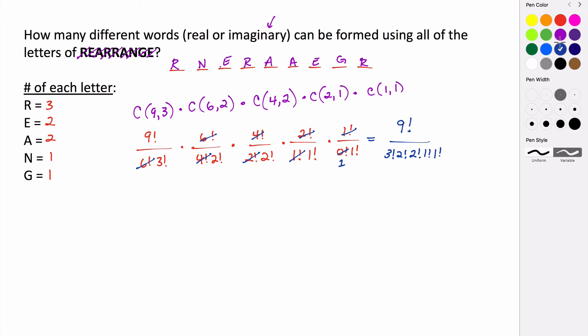And so let's expand this. So we have 9, 8, 7, 6, 5, 4, 3, 2, 1. All of that divided by 3 times 2 times 1 times 2 times 1 times 2 times 1 times 1 times 1.